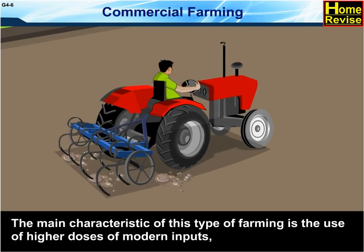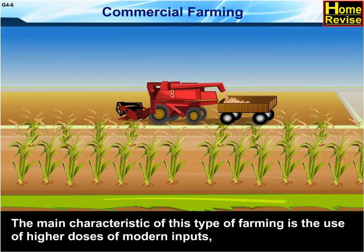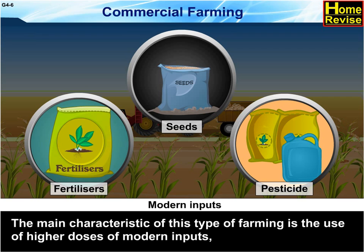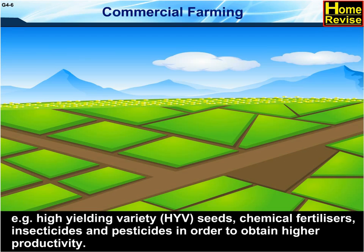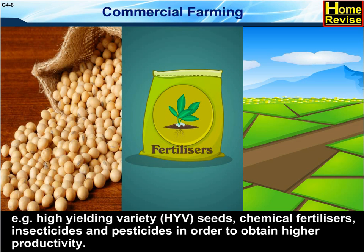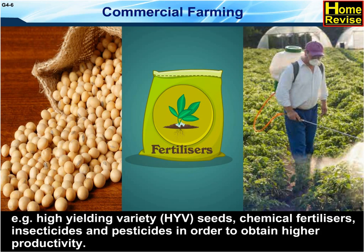Commercial farming. The main characteristic of this type of farming is the use of higher doses of modern inputs, for example, high yielding variety seeds, which are HYV seeds, chemical fertilizers, insecticides and pesticides.